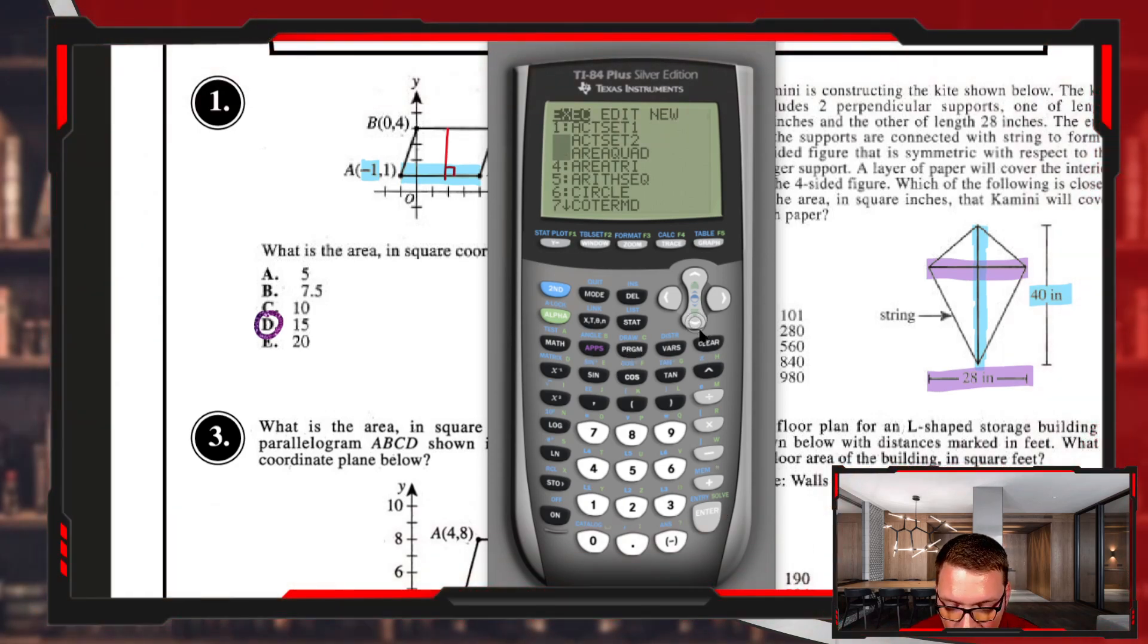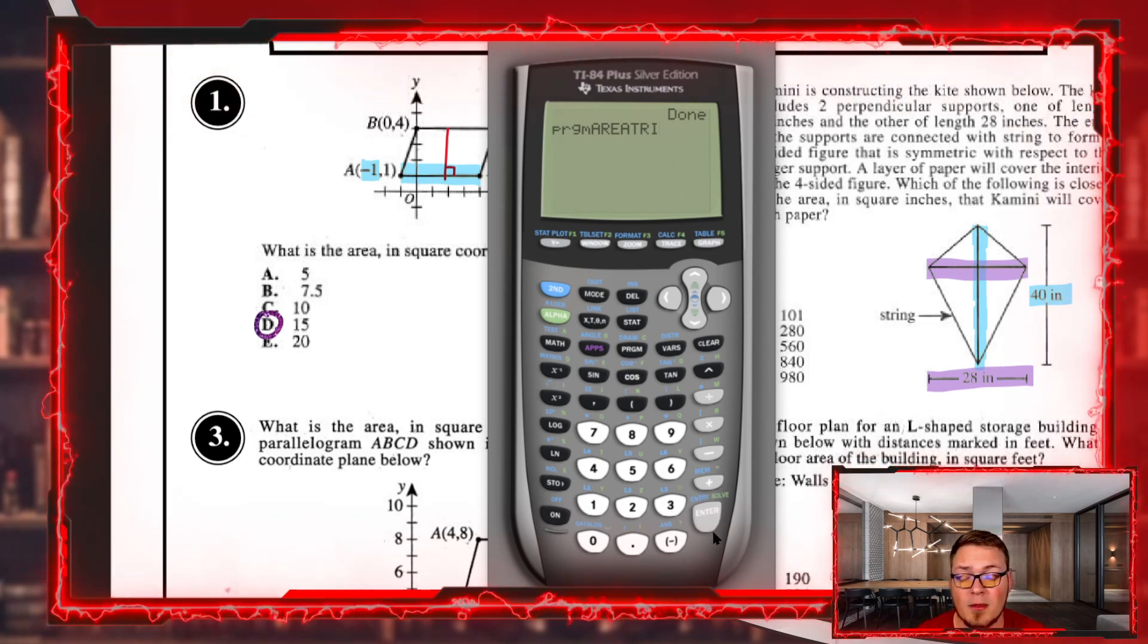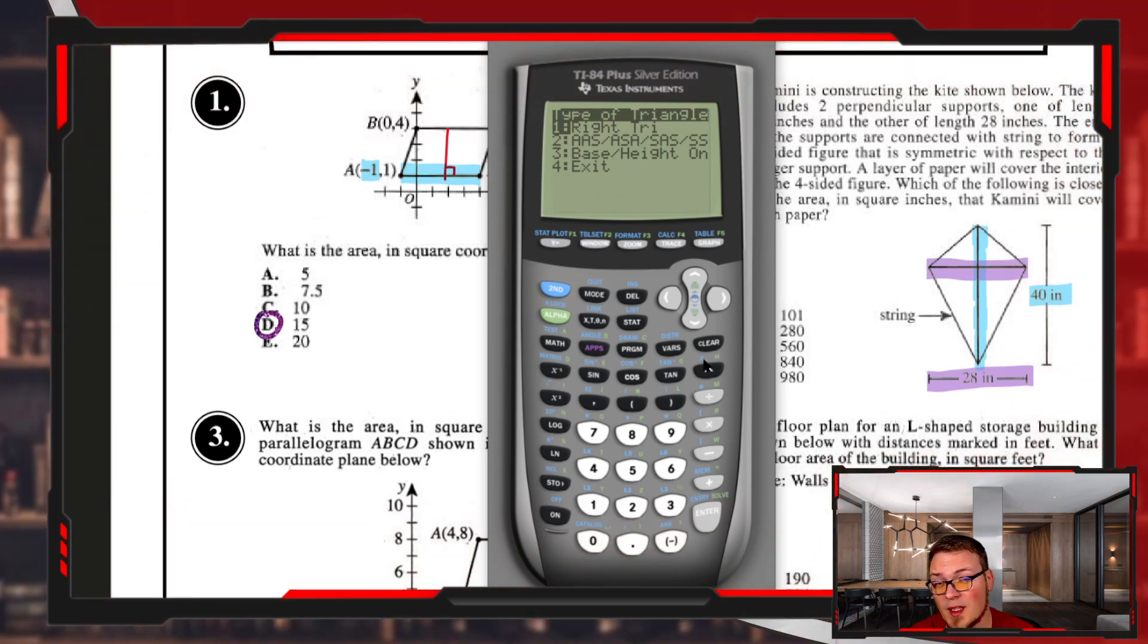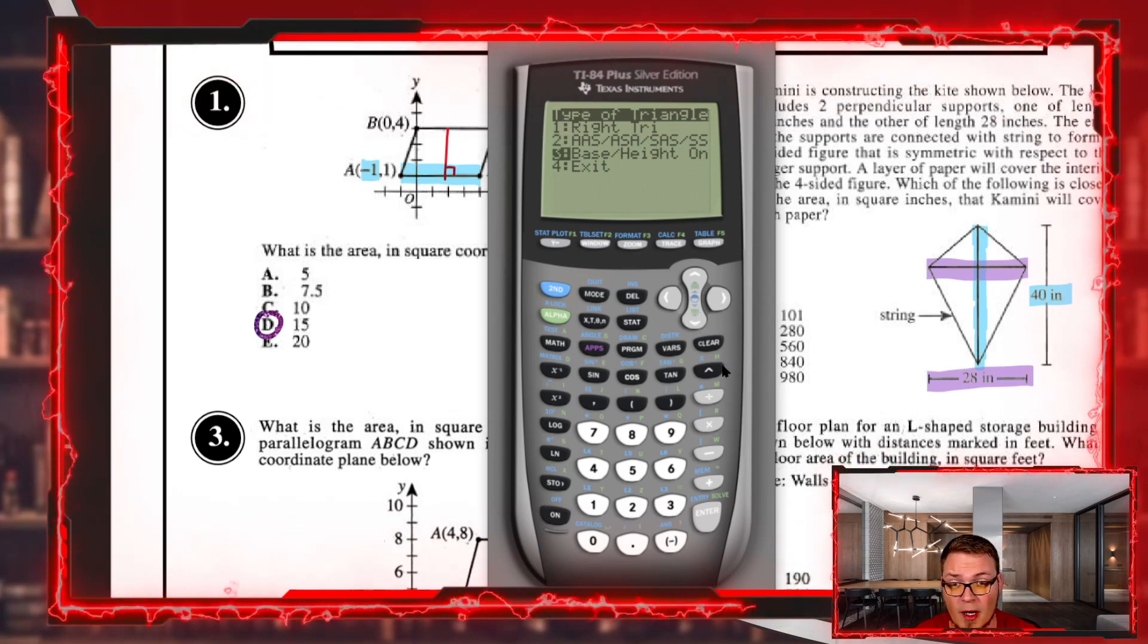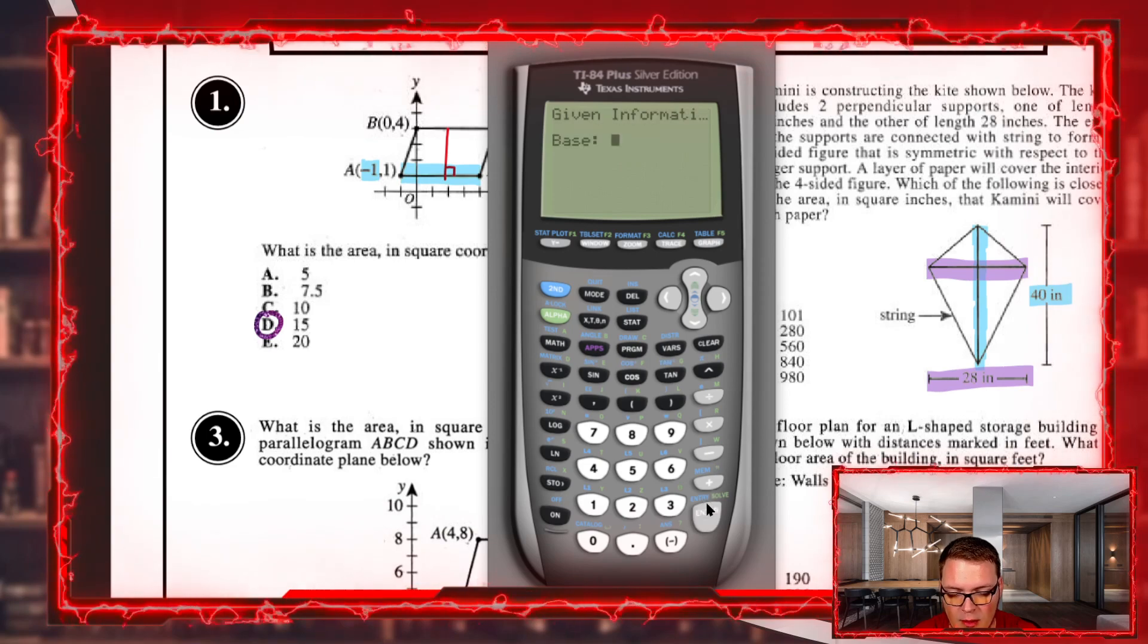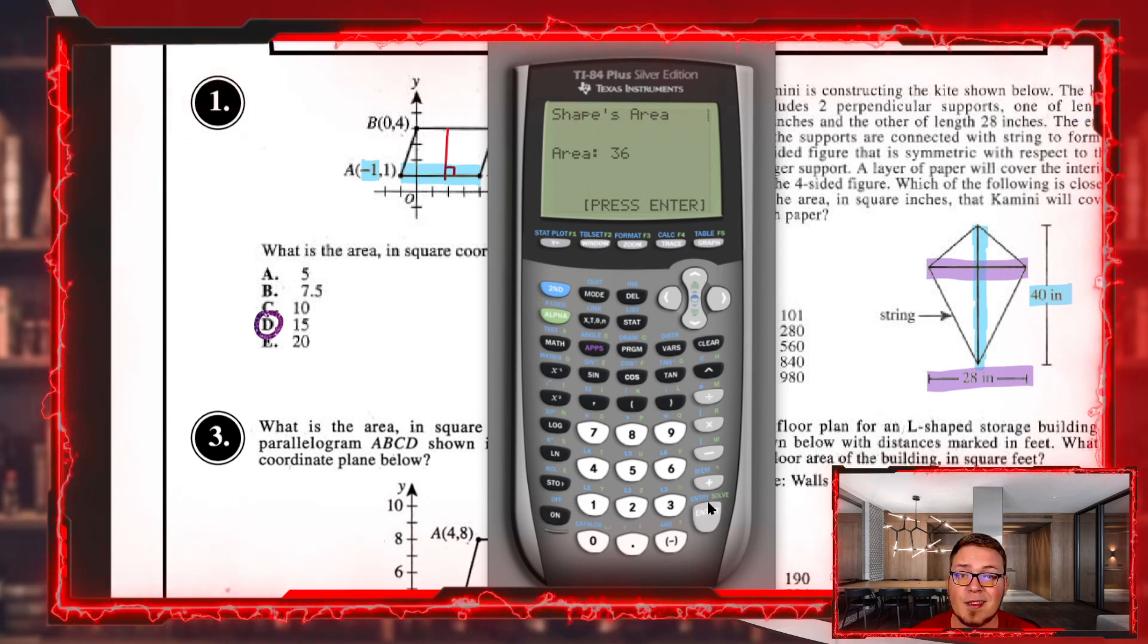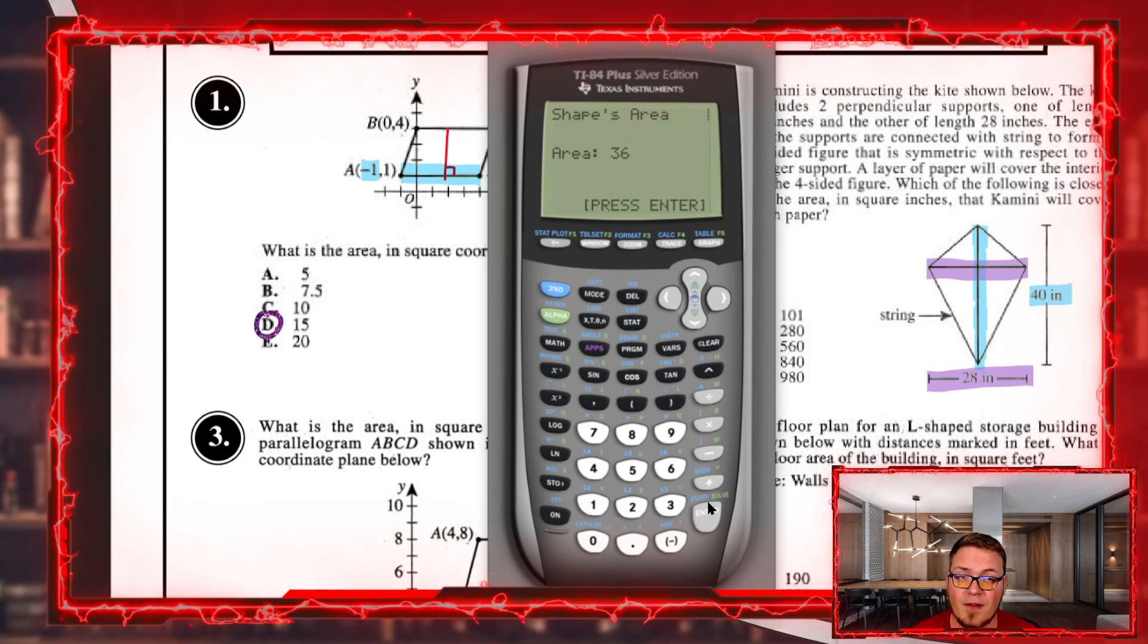Let's jump over to area tri. Area tri is the program we'll use to find the area of triangular shapes. Almost all of this is really intuitive. The two main ones this program helps with are right triangles and base height only triangles. For a right triangle, you need the base—maybe it's nine—and the height, maybe eight. The shape's area is 36.